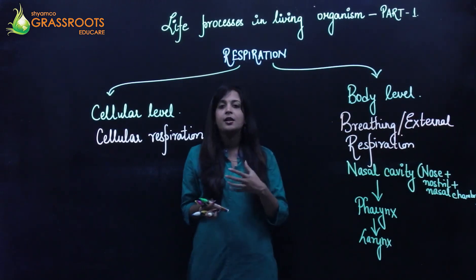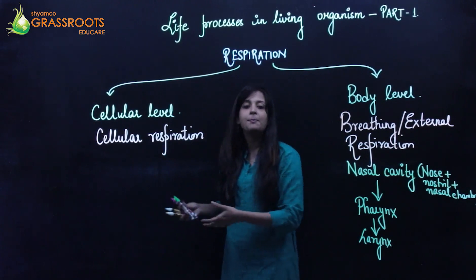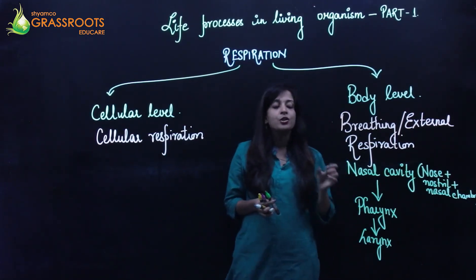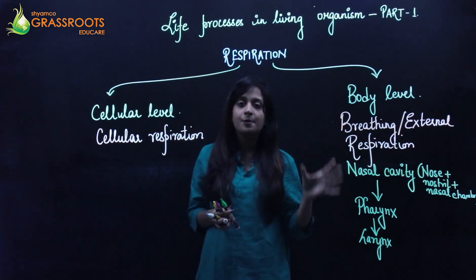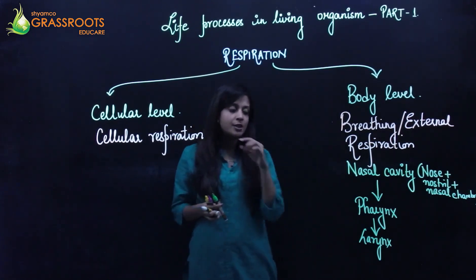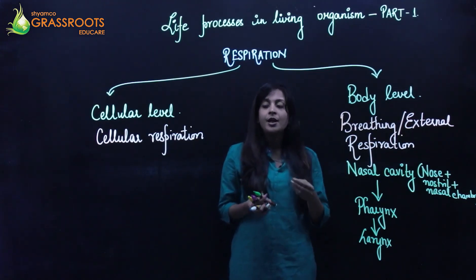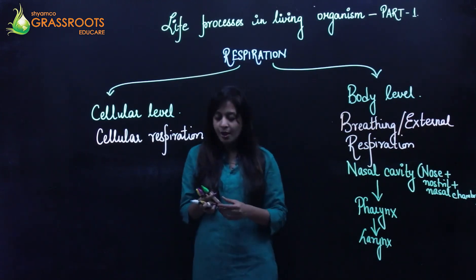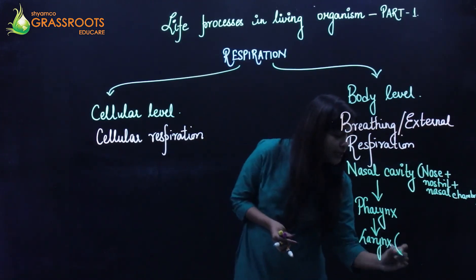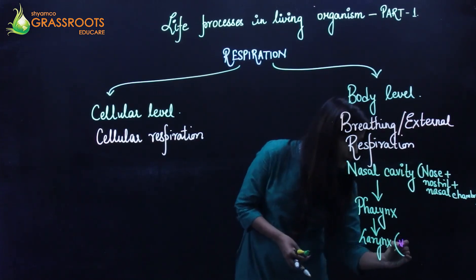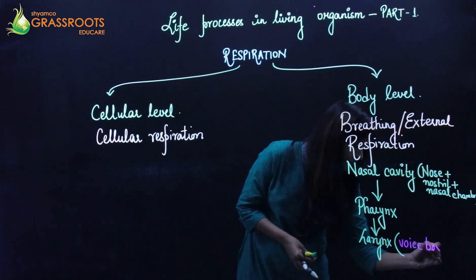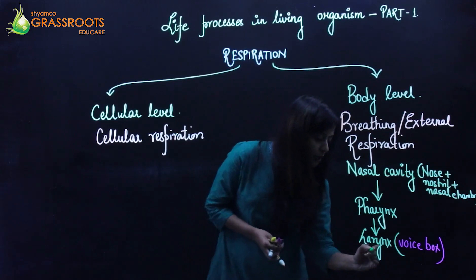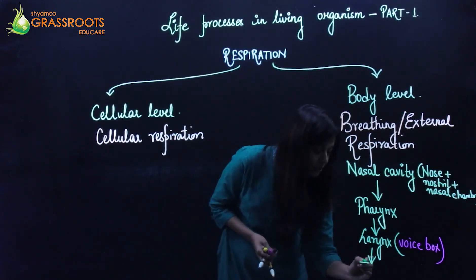From the pharynx, the air pathway leads to the larynx. The larynx is basically responsible for our voice — when we talk or speak, it is because of the larynx. So it is also known as the voice box. It is not only part of the respiratory tract but is also responsible for giving us our voice. After the larynx, the next part of the respiratory tract is the trachea.